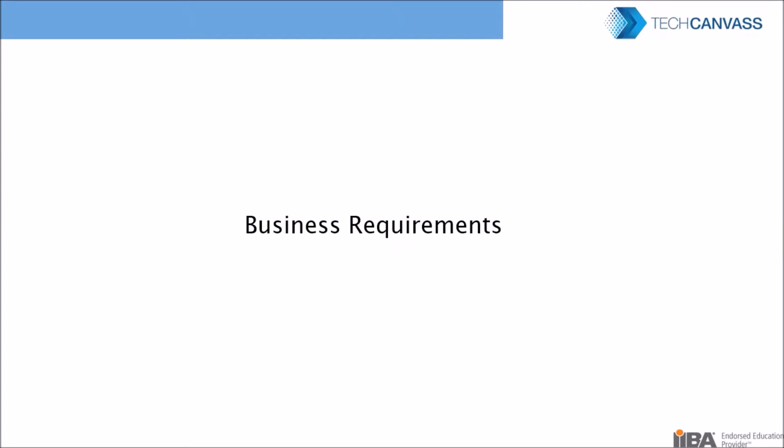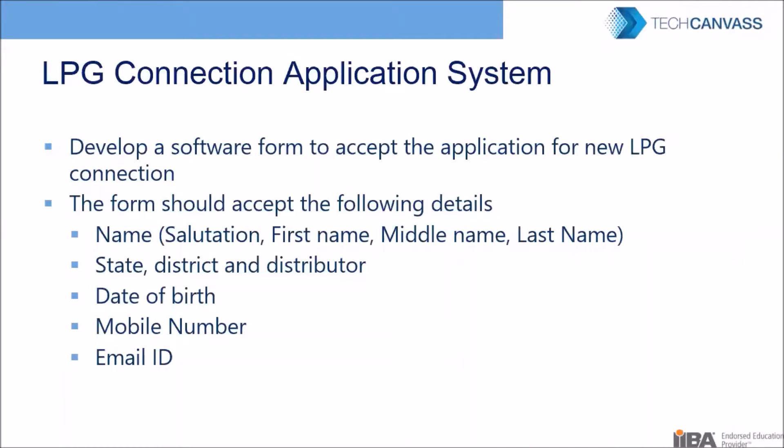As we have already discussed, the software development process starts with business requirements. The customer starts by saying, 'I want to get this software developed,' or 'I want to automate a particular business process.' That is the customer's version, and it is known as business requirements. Business requirements come in different flavors — some could be pretty detailed, some could be one-liners, and some could be in between.